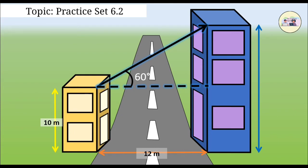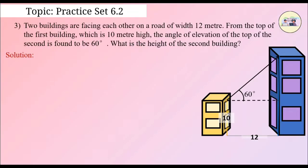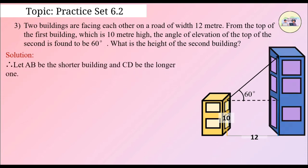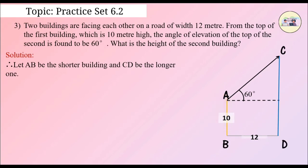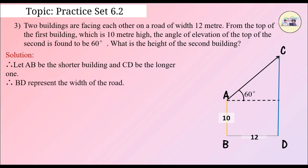Solution. It is clear from the question that the person is standing on the shorter building. Let AB be the shorter building and CD be the longer one. BD represents the width of the road. Therefore, AB is equal to 10 meters and BD is equal to 12 meters.